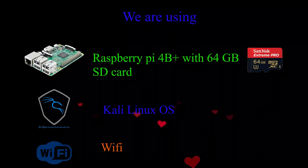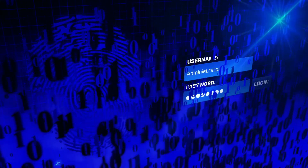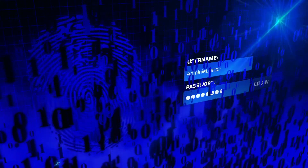So in this video, we show you how to set a static IP address for your Raspberry Pi system with Kali Linux. You have to enter your username and password.